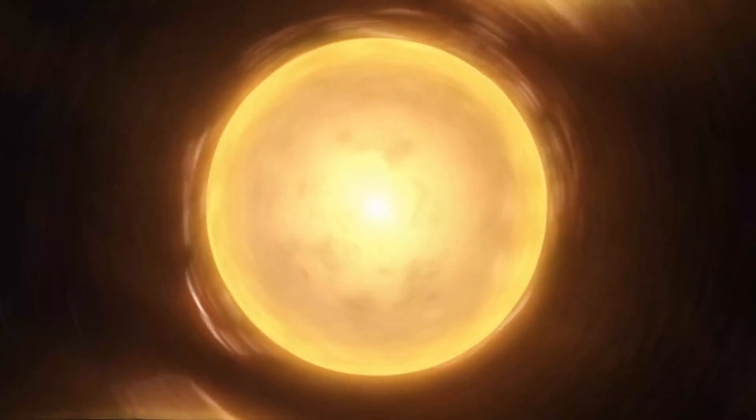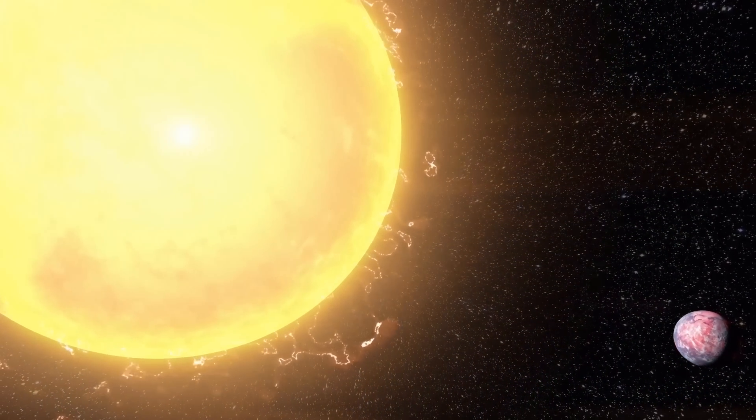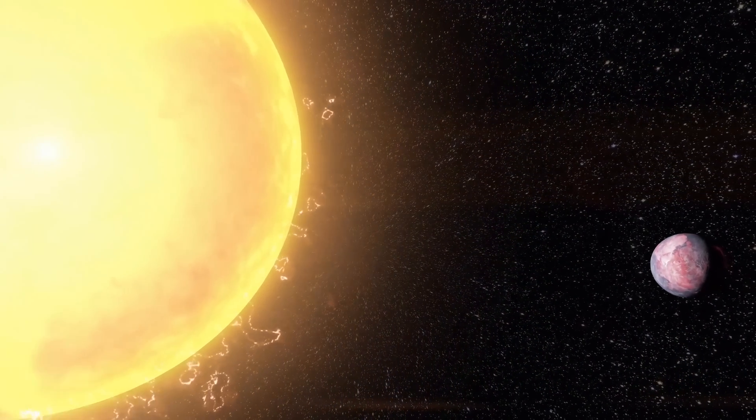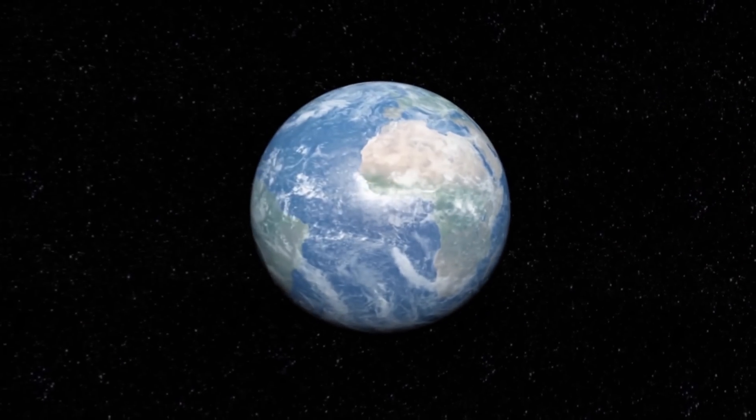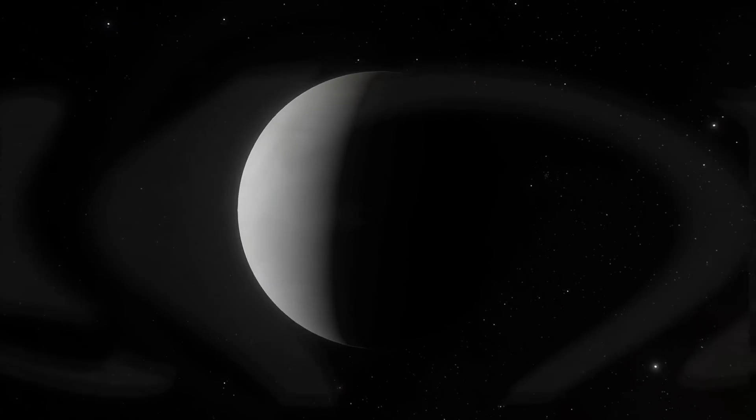The Milky Way galaxy collides with the Andromeda galaxy. The moon moves away from the Earth. The sun's luminosity increases, and with it, the surface temperature of our planet. All of Earth's water evaporates.